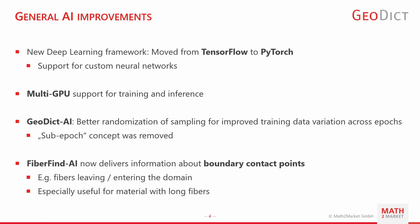We also added multi-GPU support for both training and inference. And we improved the GeoDict AI training procedure — specifically we improved the sampling randomization for better convergence and got rid of the rather confusing sub-epoch concept. For details about how we did that, I advise you to visit my breakout session tomorrow as well.